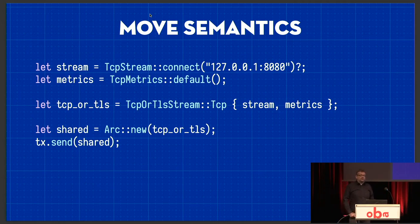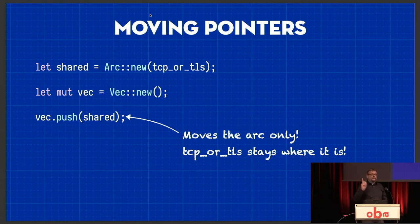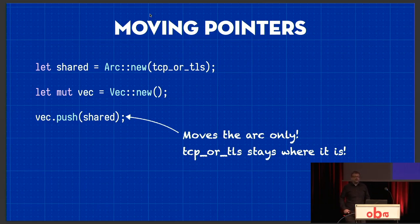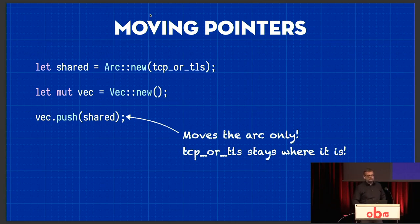We take that pointer — because an Arc is a pointer, really — and move that. Once we move this onto the heap and we're moving the pointer, we're not actually moving the object or the value anymore. That stays where it is. So in this case, we're making an Arc, which is a pointer and a number, and we're pushing it onto the end of a vector. We're only moving that Arc, but the TCP or TLS thing stays where it is. That's important because we'll use that later.